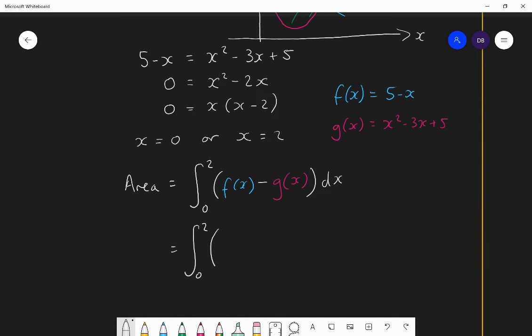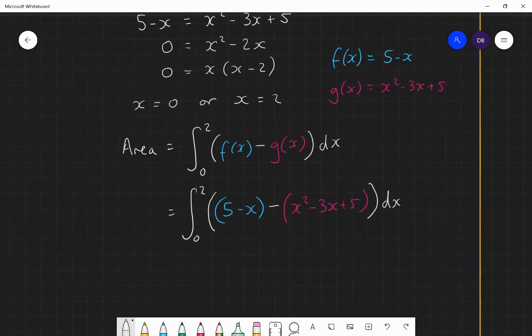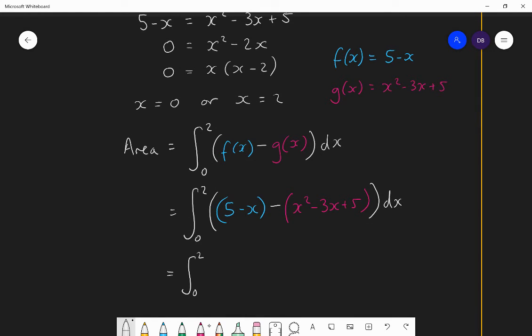So we have integral between 0 and 2 of 5 minus x take away x squared minus 3x plus 5. And at this point, you need to be careful with your negatives, because you're taking away a whole expression. And so you need to make sure that you deal with any taking away a negative. So we're going to do the integral between 0 and 2 of the simplified version of that. Now, when we simplify this, the 5 take away the positive 5 will be 0. The minus x take away minus 3x will give us 2x, because minus x minus minus 3x is minus x plus 3x. So that'll be 2x. And we'll also get, we have no x squared in the blue function. We're taking away 1x squared, so we'll have a negative x squared. So we're going to end up with 2x take away x squared.